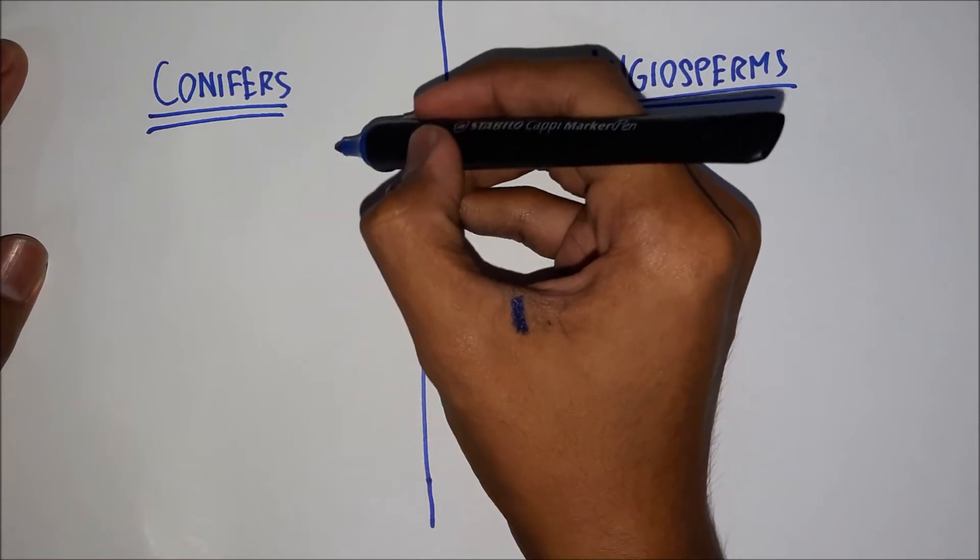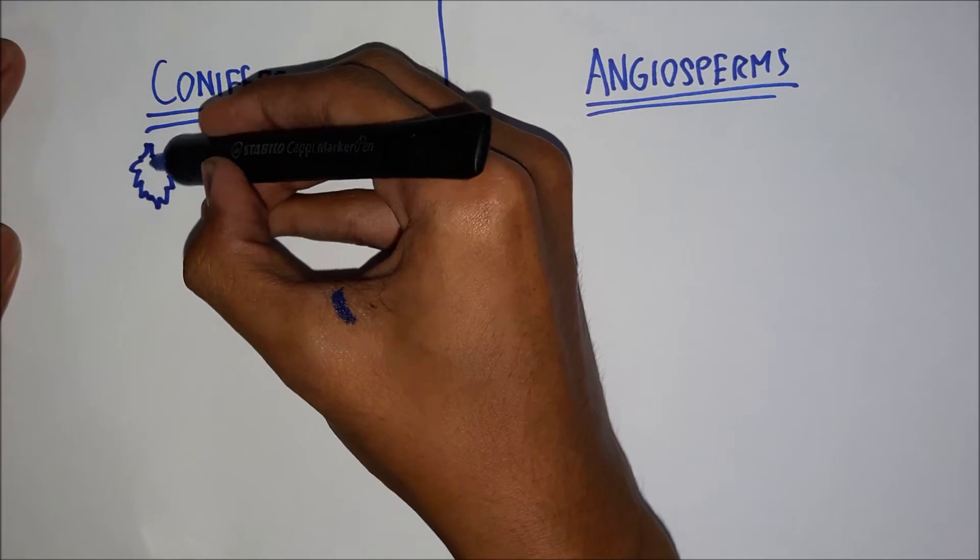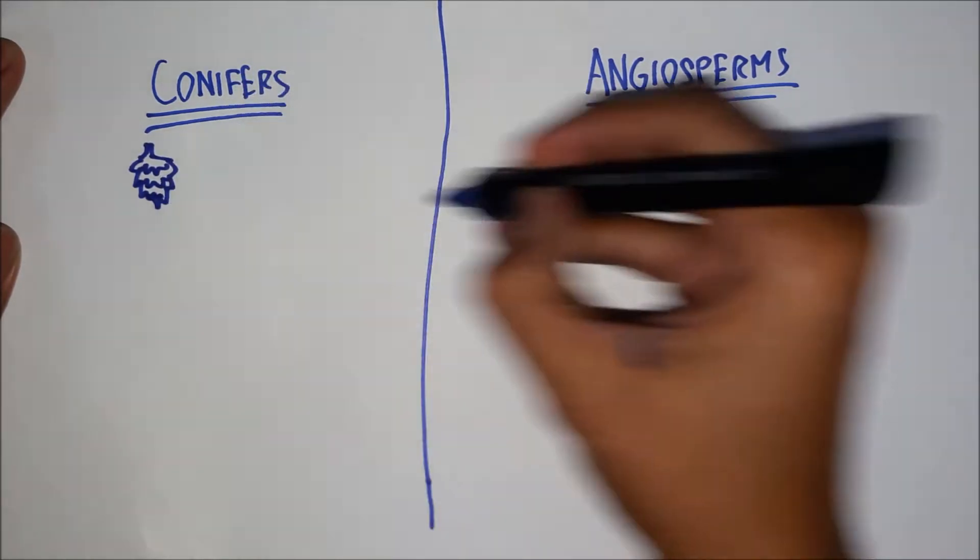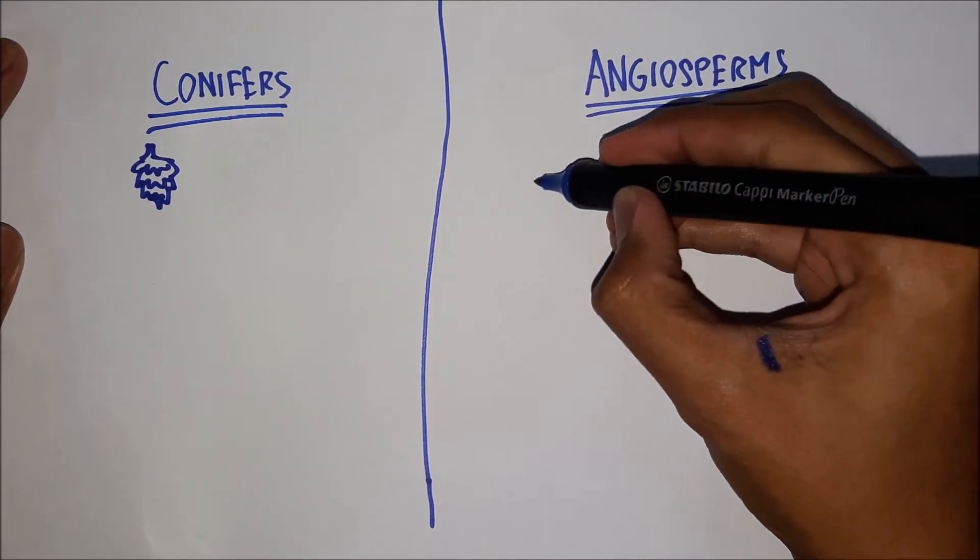First of all, the reproductive structure of conifers are the pine cones. A rough sketch like that. While in flowering plants, the reproductive structures are obviously the flowers.